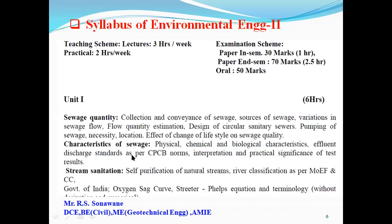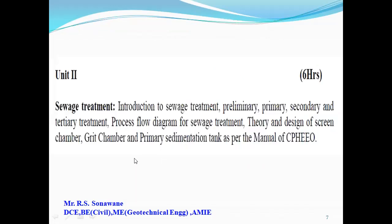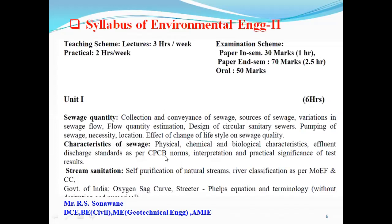The second part is related to sewage characteristics. Mostly any sewage has three characteristics: physical, chemical, and biological. As per CPCB norms — that is Central Pollution Control Board — they have some norms we will see in that part. The last part of unit one is stream sanitation: self-purification, purification of natural streams, and river classification as per Marston.